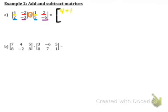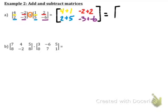We have four plus one, then negative two plus two, then two plus five, and negative three plus negative six. When you add the corresponding elements, they must be in those same exact positions — you cannot just put them wherever you'd like. Simplifying each element: five, zero, seven, negative nine. Both matrices were a two by two — two rows and two columns — so because they have the same exact dimensions, you can add or subtract them.